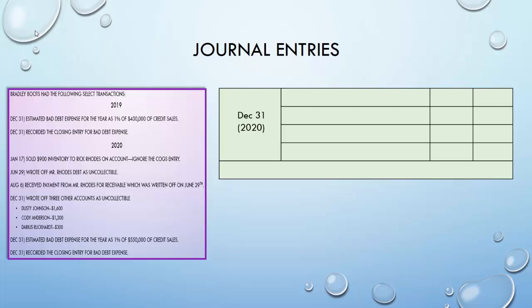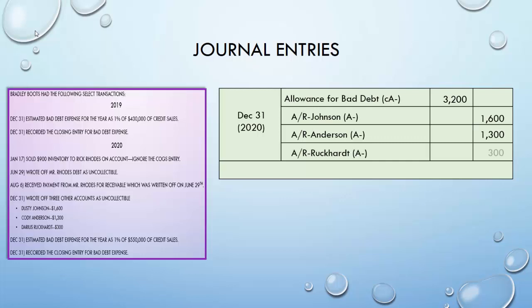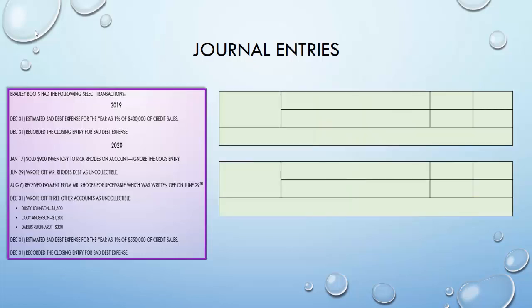On December 31st 2020, they write off three other accounts as uncollectible. Using the allowance method, the debit is always to Allowance for Bad Debt because bad debt expense was already recorded previously. The total is $3,200 — $1,600 from Dusty Johnson, $1,300 from Cody Anderson, and $300 from Darius Ruckert. We credit all three receivables to reduce them to zero, and debit Allowance for Bad Debt for the $3,200 total.